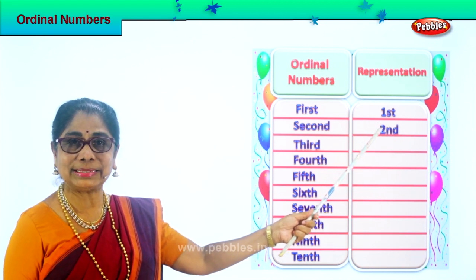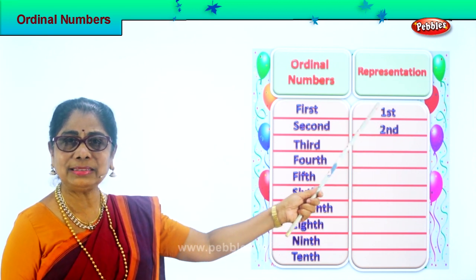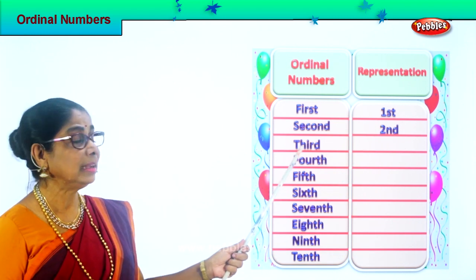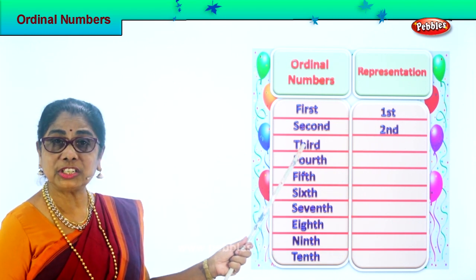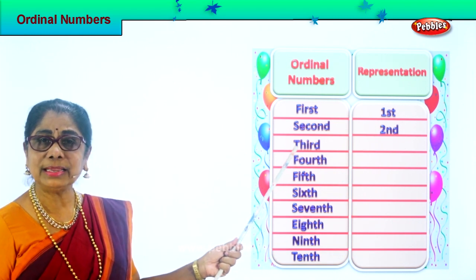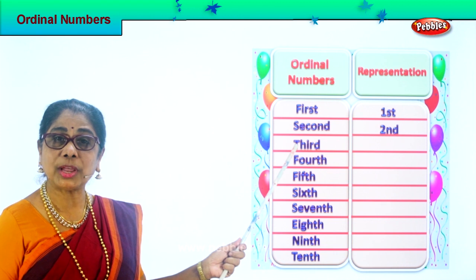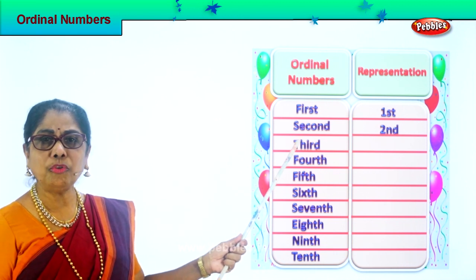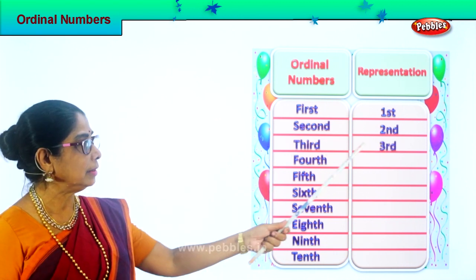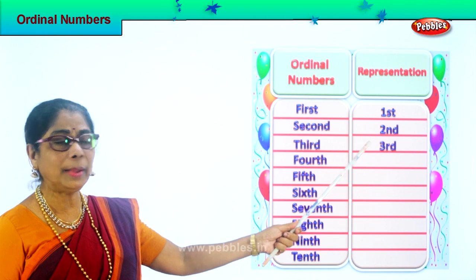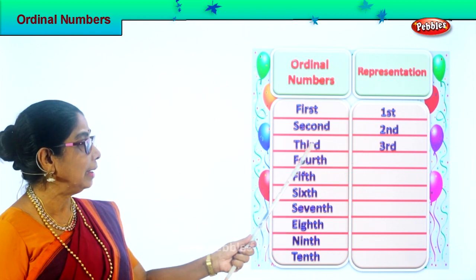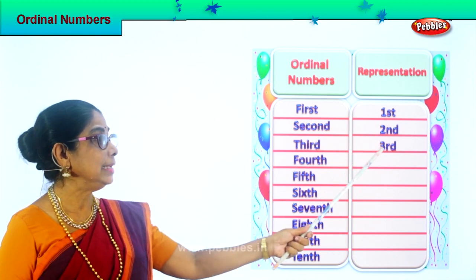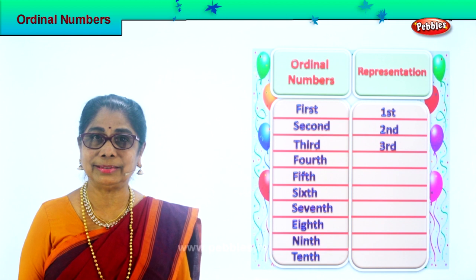So you read this as first, second. Let's look at the third. Spell third: T-H-I-R-D. Third. How do you represent third? Put number three and write RD next to it: 3rd.